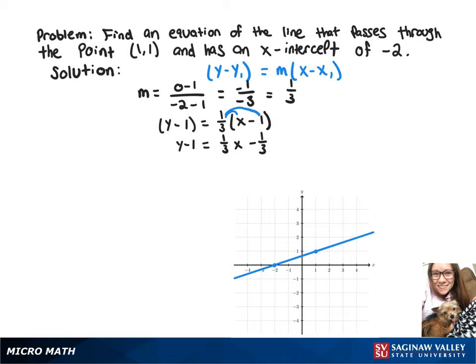Now we'll add 1 to both sides. And that gives us our equation y equals 1 third x plus 2 thirds.